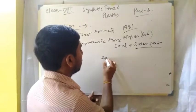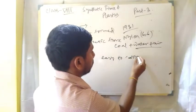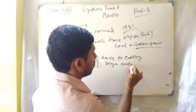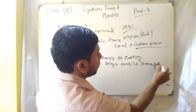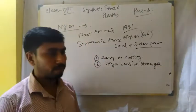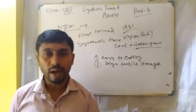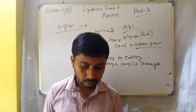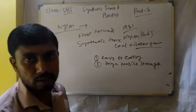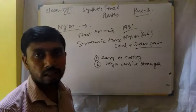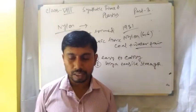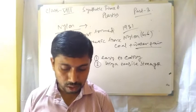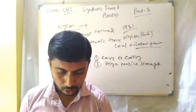Why is nylon preferred over steel wire? Because of its lightweight — it is easy to carry — and its high tensile strength. Steel wire actually has less tensile strength than nylon. Nylon is also ductile and has less affinity towards water. These are the basic properties that distinguish it from steel wire and explain its many uses.